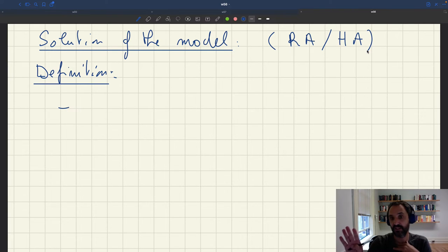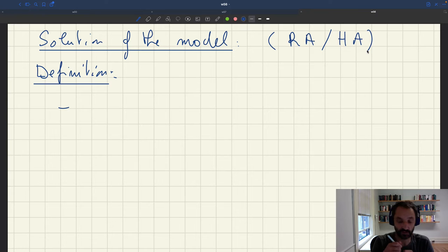So let's just focus on figuring out what is the value of the aggregate variables, whether it's in a representative agent or a heterogeneous agent model. So definition, what's the definition of the solution of the model? What does it mean to solve the model?